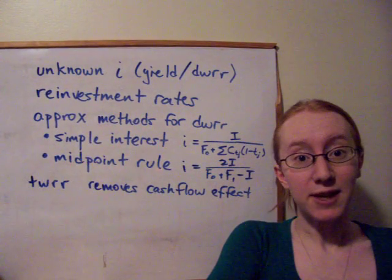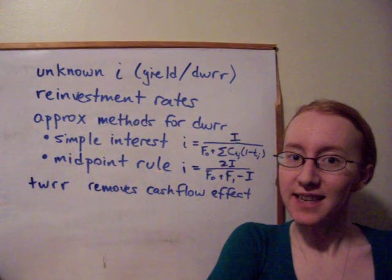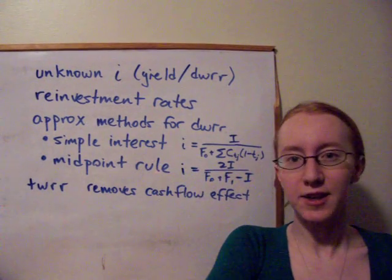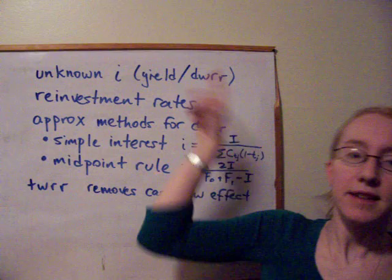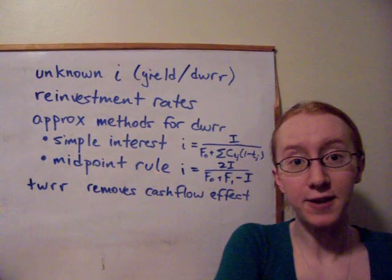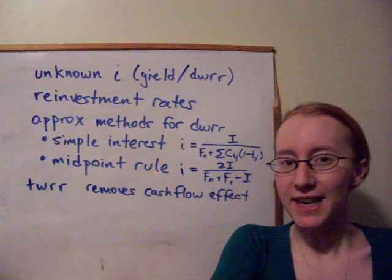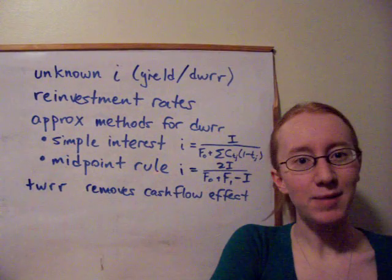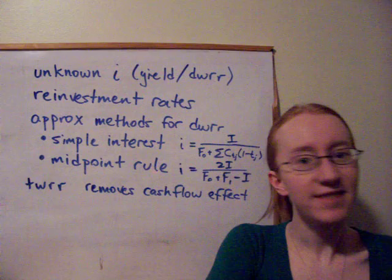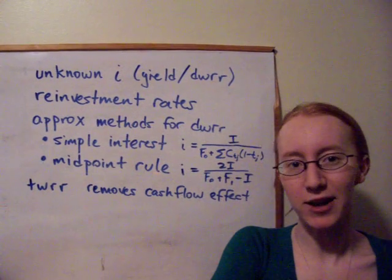The first way of course to measure would be to actually do an exact calculation of the dollar rated rate of return, just like we did up here. Set up the equation of value and solve for i using whatever methods we can come up with. If it turns into a quadratic equation, great. If not, we can use the financial calculator, Excel, or any of the numerical techniques we talked about in class.